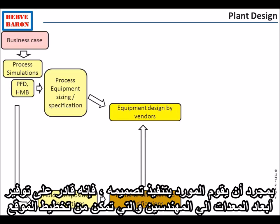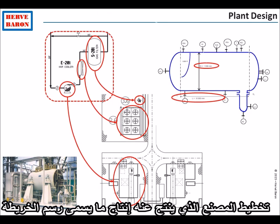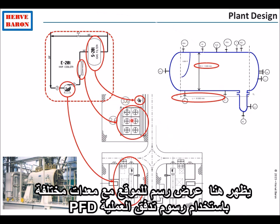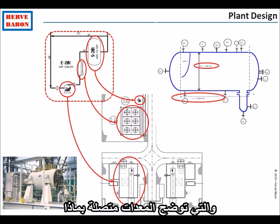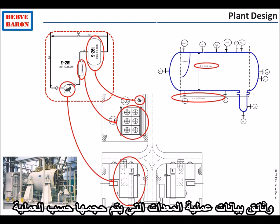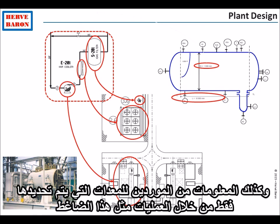Once the vendor has performed its design, it provides equipment dimensions to the engineer, which enables the plant layout to be defined. The plant layout — which results in the production of what is called the plot plan, a plan view of the plant with the various equipment — is drawn using the process flow diagrams, which show which equipment is connected to which, the process data sheets for equipment sized by process, as well as information from vendors for equipment which are only specified by process, such as a compressor.